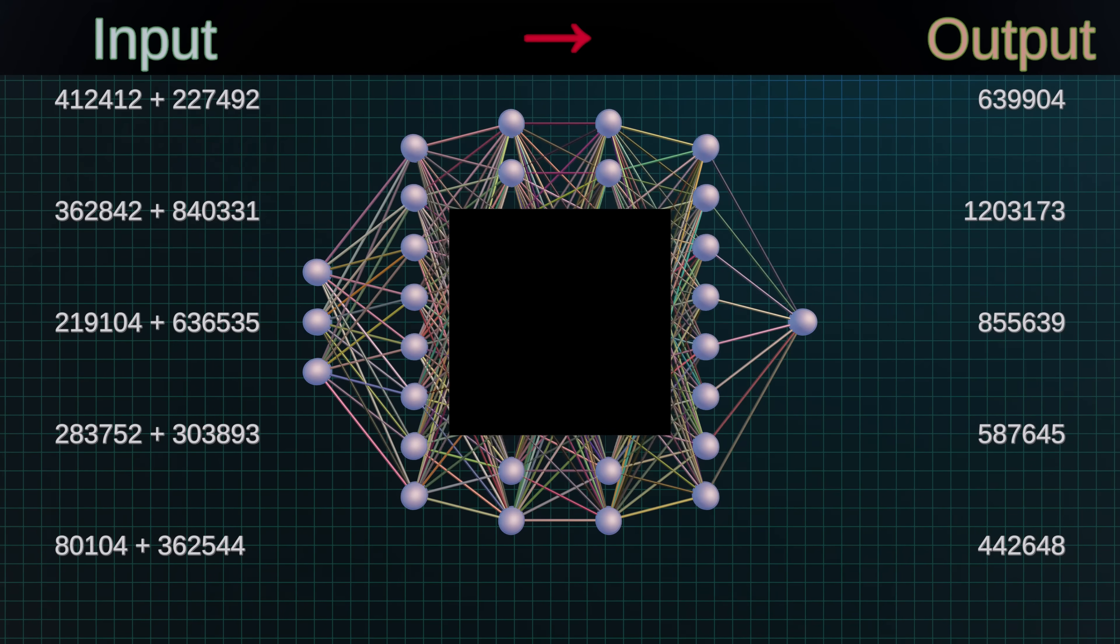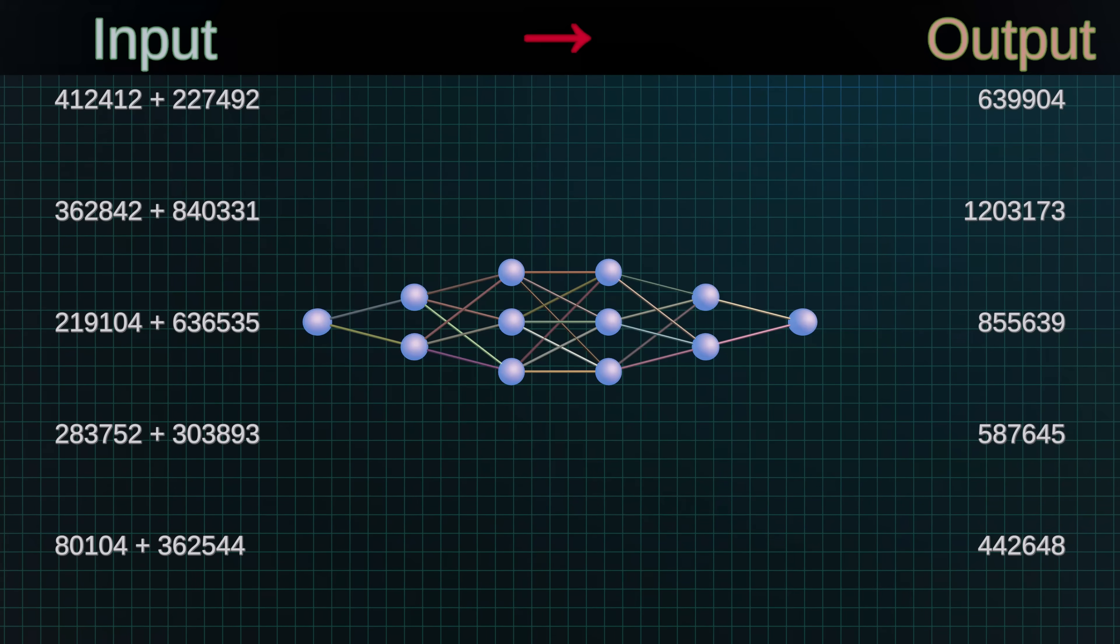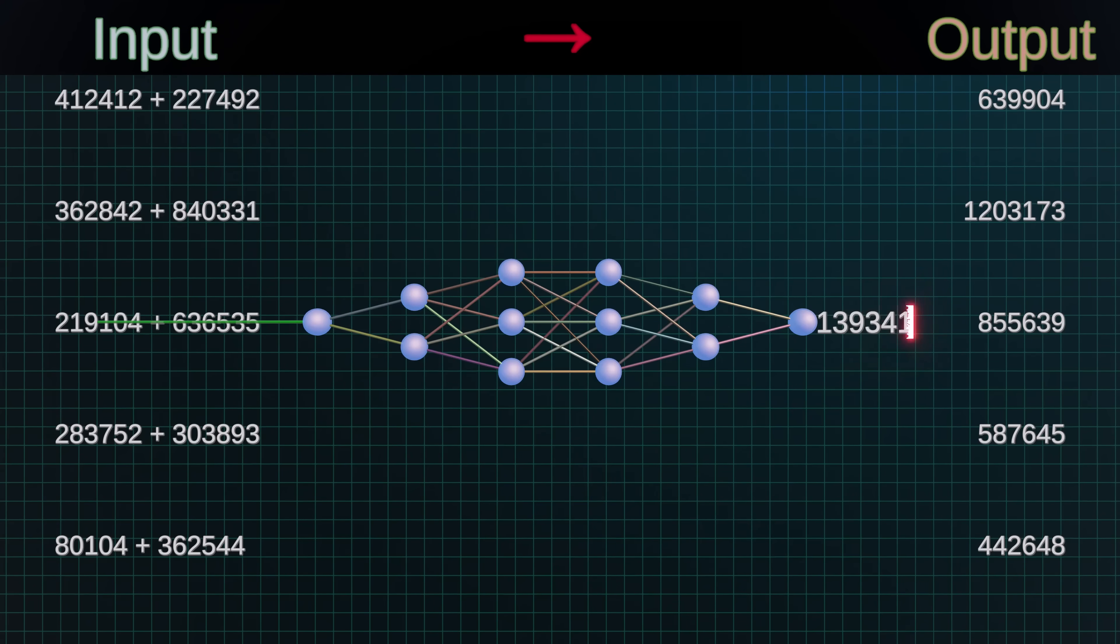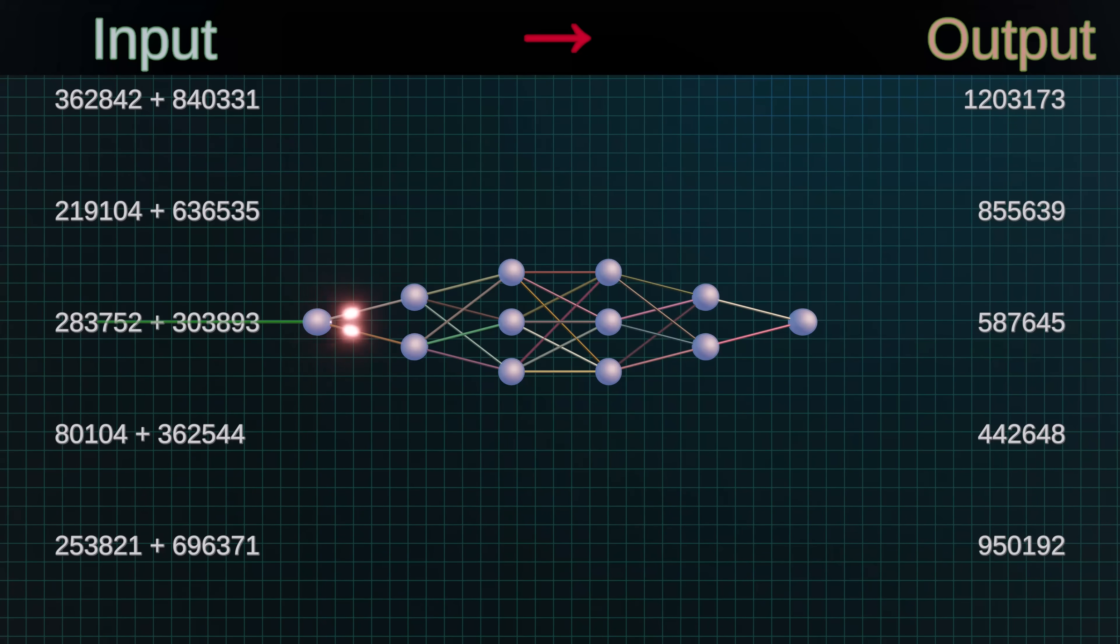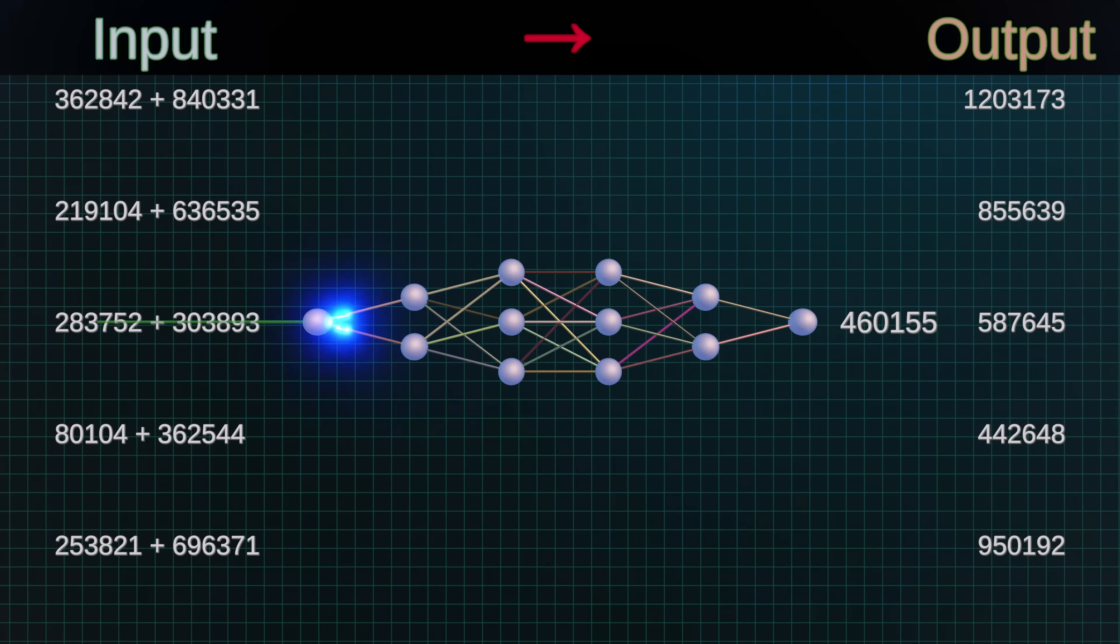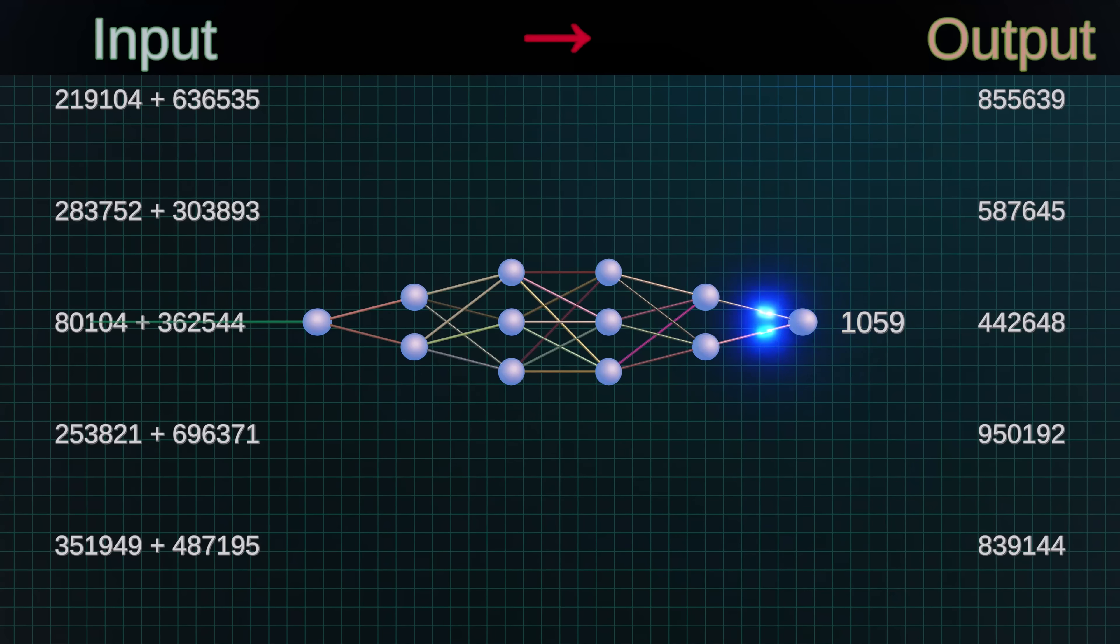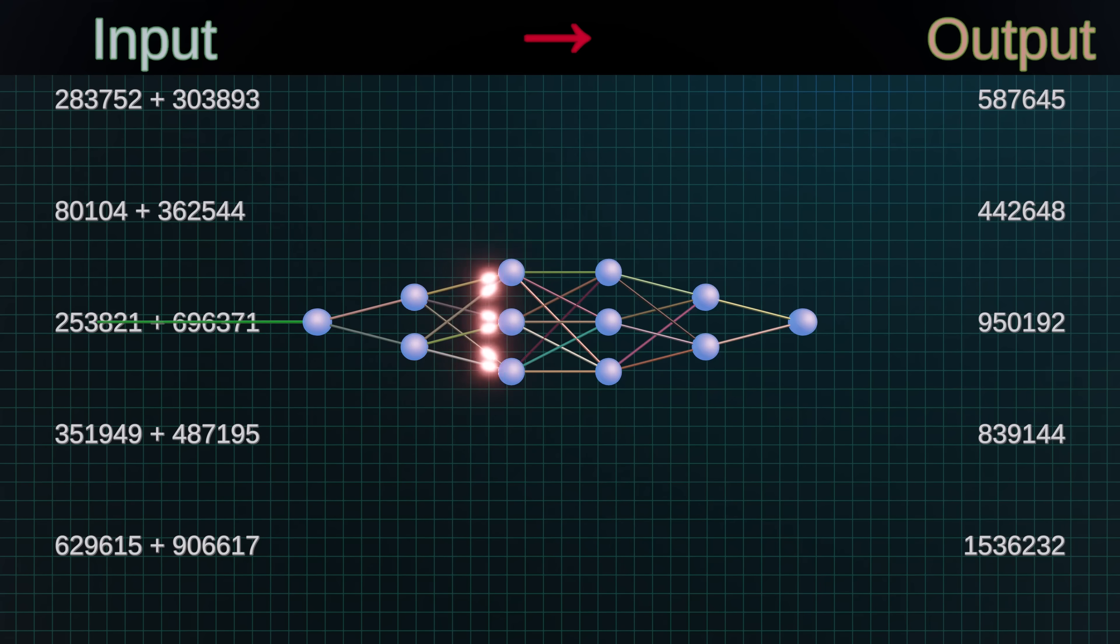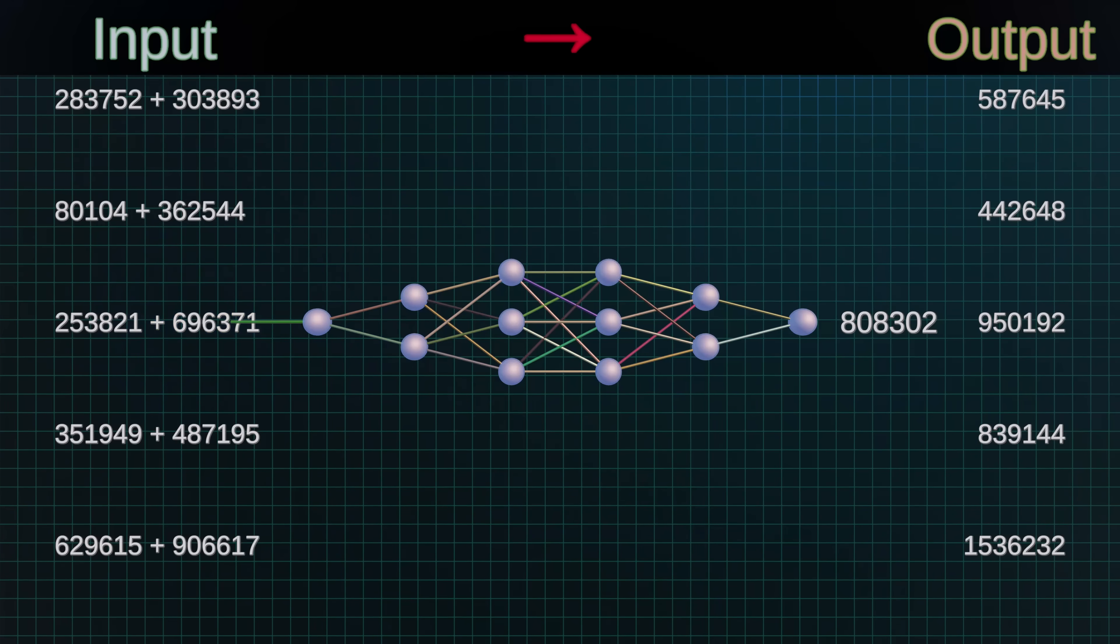One way to prevent overfitting is to reduce the size of the neural net, so that it simply does not have enough capacity to memorize all of the training examples. But even a very small neural net can still implement the algorithm for addition. So, if we choose the size of the neural net just right, then the only solution that it can implement will be the correct one, and it will be forced to learn that. And then the model will be able to generalize to new inputs.